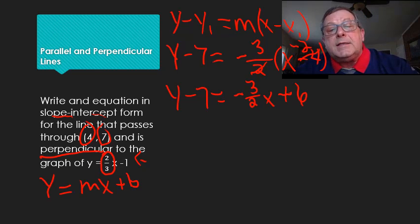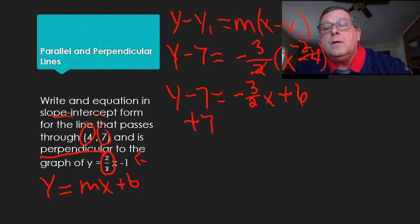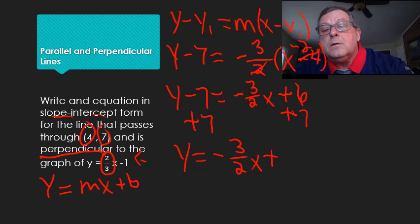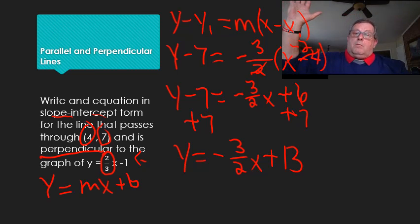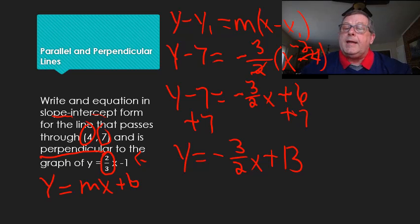Adding 7 to both sides, I end up with y equals negative 3 over 2 x plus 13. We've written an equation in slope-intercept form for a line passing through the point 4, 7 that is perpendicular to y equals 2 thirds x minus 1.